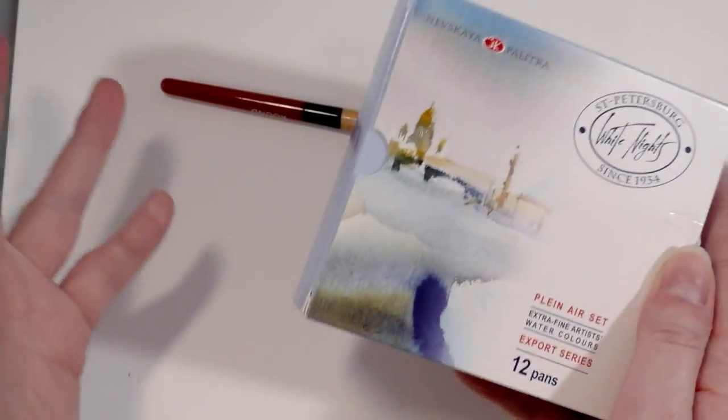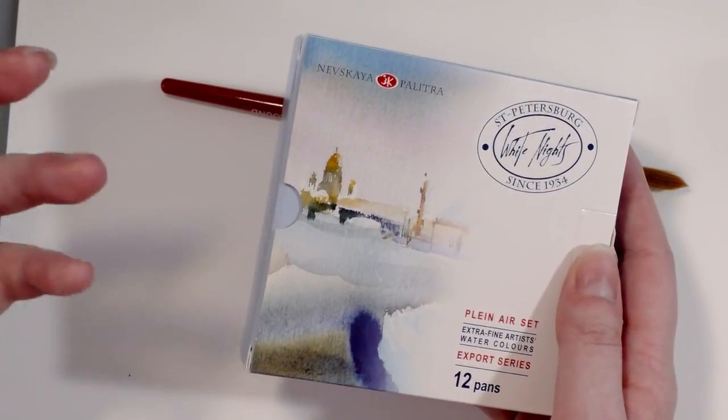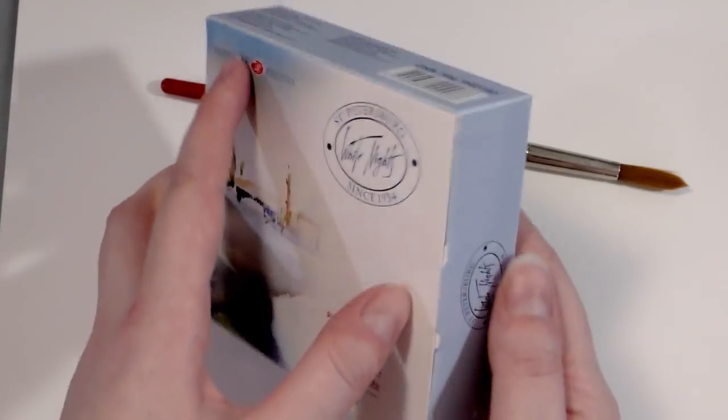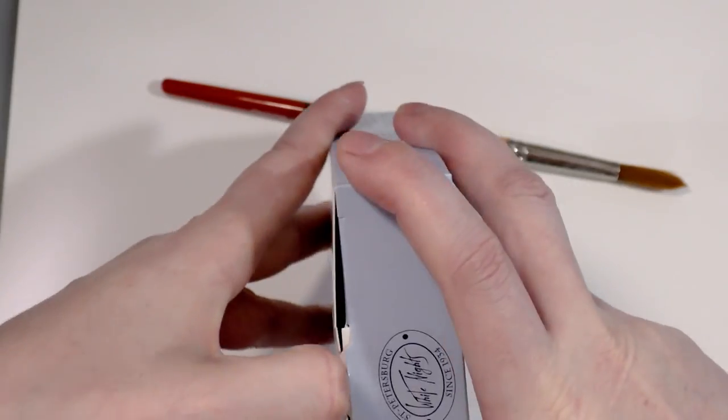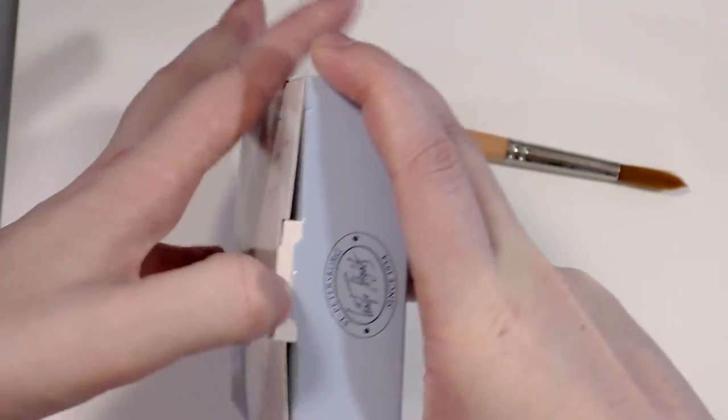So this is the plastic set. They come in like four different sets: cardboard, plastic, metal, and wooden sets. And this just came in the other day.